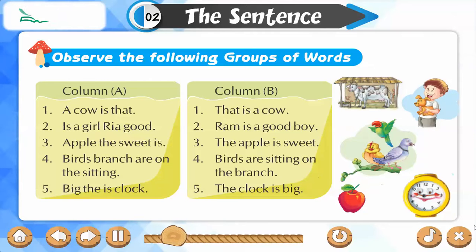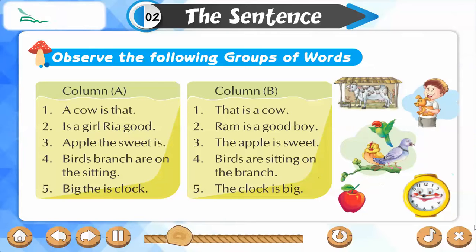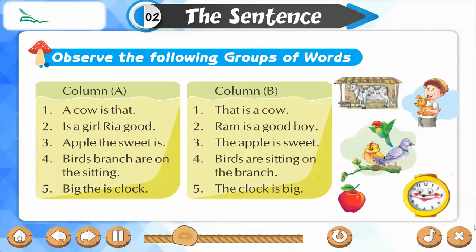Column A: 2. Is a girl Ria good? Column B: 2. Ram is a good boy. Column A: 3. Apple the sweet is. Column B: 3. The apple is sweet.